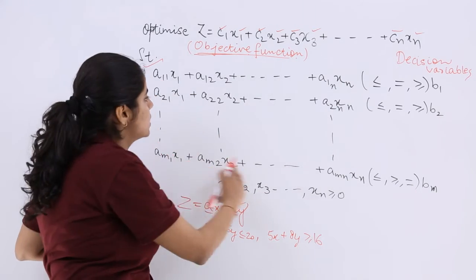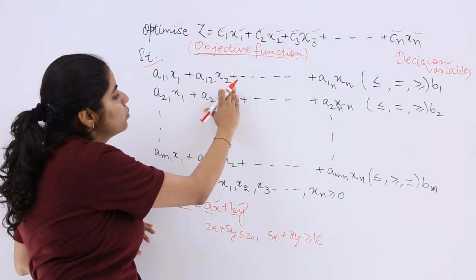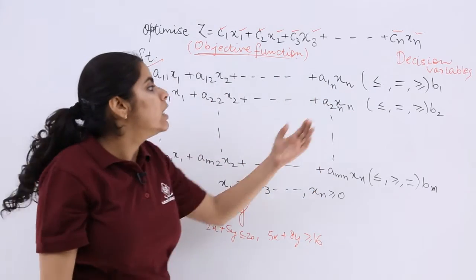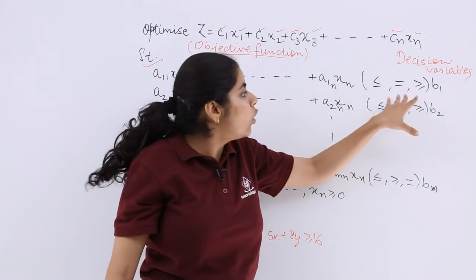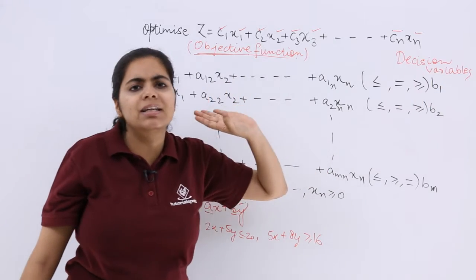So subject to the conditions: a11x1 plus a12x2 and so on till a1nxn, either less than equal to b1, or equal to b1, or greater than equal to—depends.